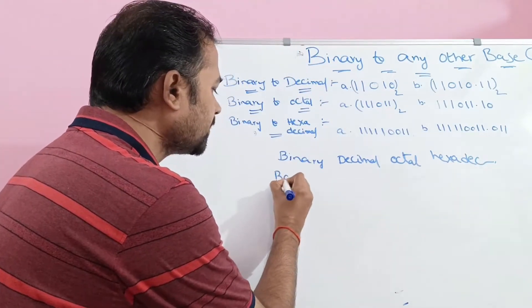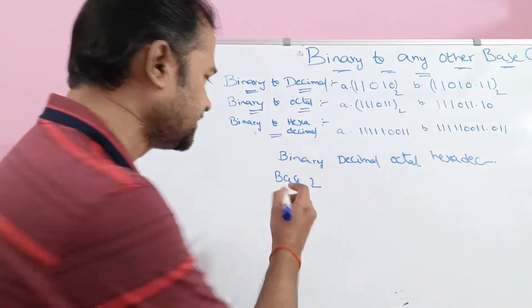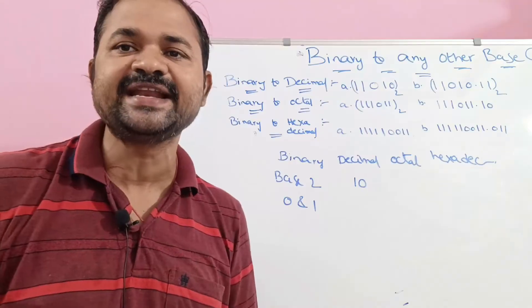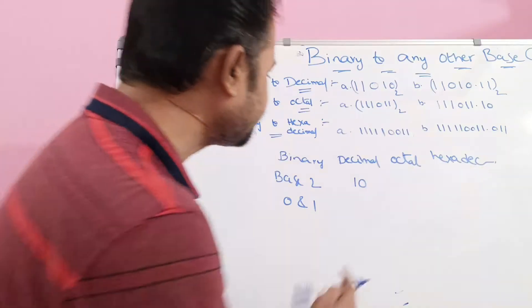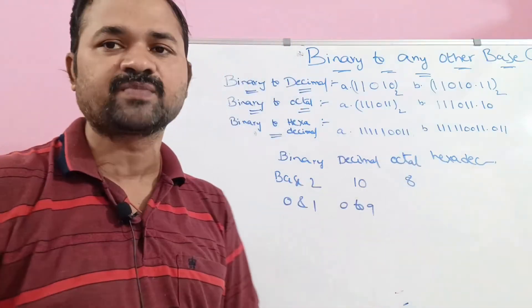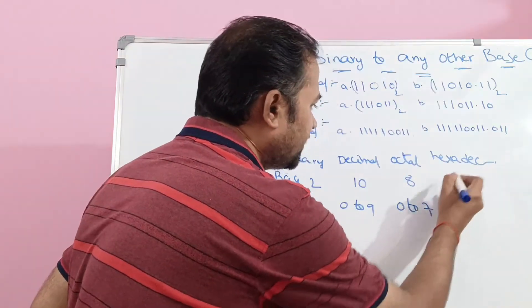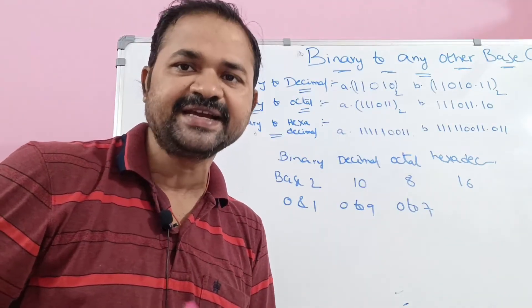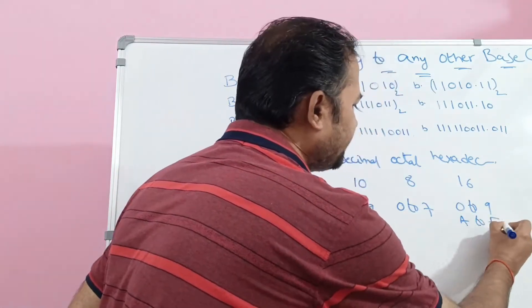Binary means base value is 2 and contains 2 symbols: 0 and 1. Decimal means base value is 10 and contains 10 symbols from 0 to 9. Octal means base value is 8 and contains 8 symbols from 0 to 7. Hexadecimal means base value is 16 and contains 16 symbols from 0 to 9 and A to F, where A to F means 10 to 15.